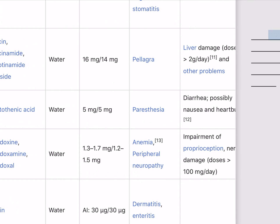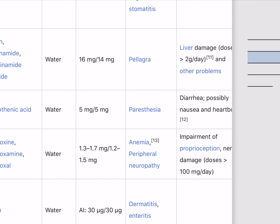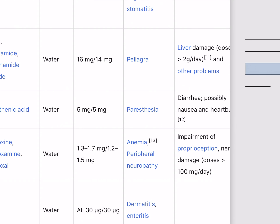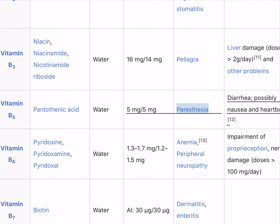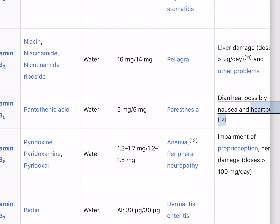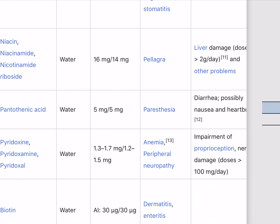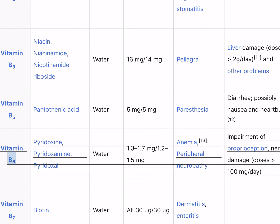Sources of vitamin B3 include meat, fish, eggs, many vegetables, mushrooms, and tree nuts. Vitamin B5 (pantothenic acid) is water-soluble; 5 mg/5 mg recommended. Deficiency causes paresthesia; excess may cause diarrhea, nausea, and heartburn. Sources include meat, broccoli, and avocados.